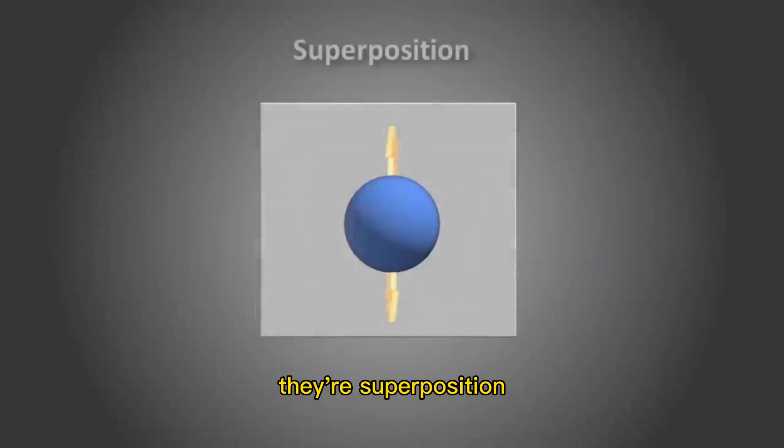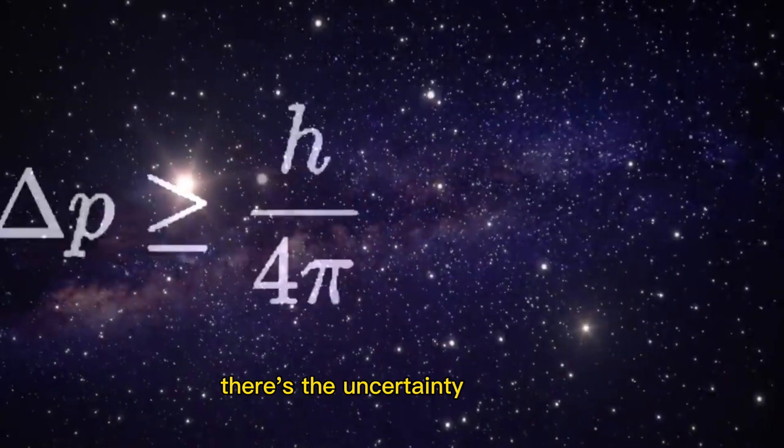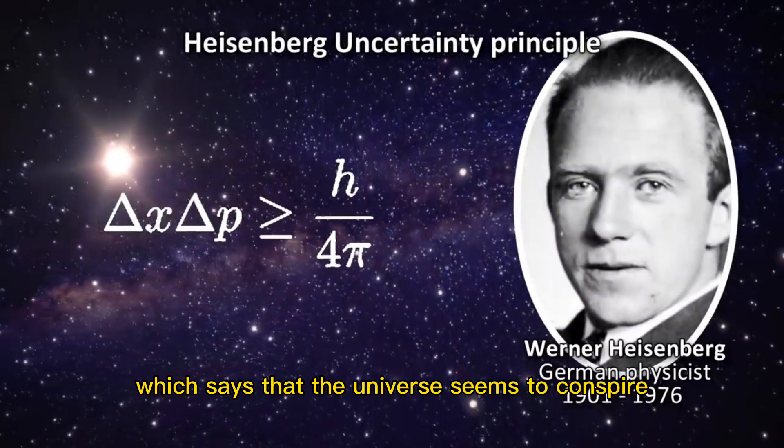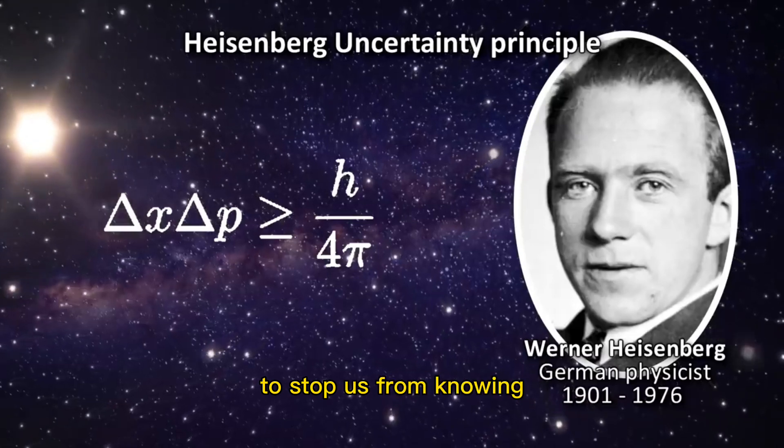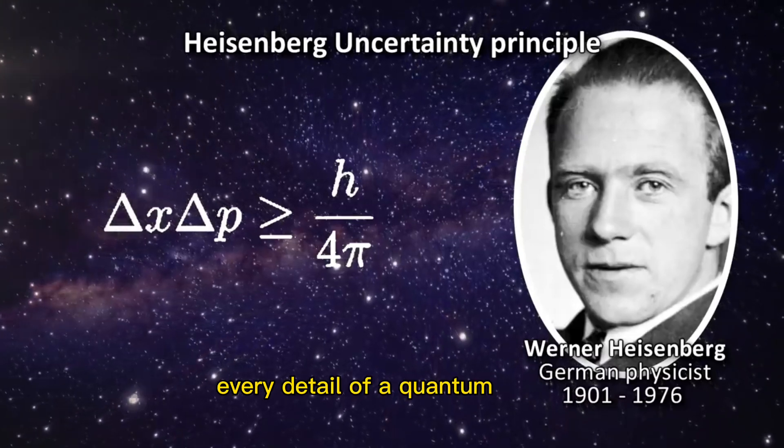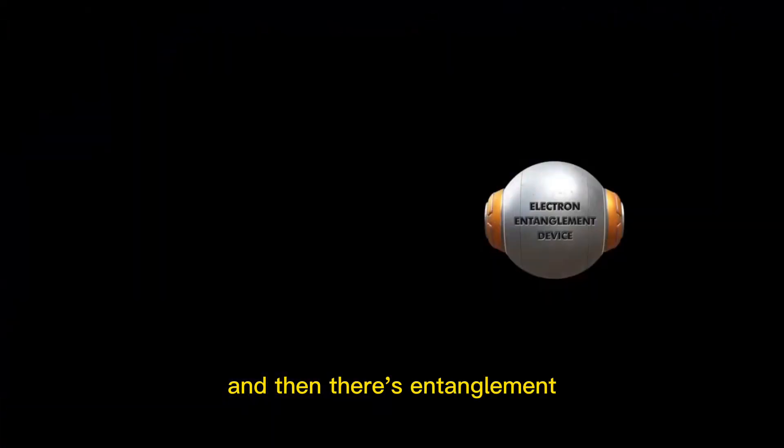There's superposition, where the objects seem to be two things at once. There's the uncertainty principle, which says that the universe seems to conspire to stop us from knowing every detail of a quantum object. And then there's entanglement.